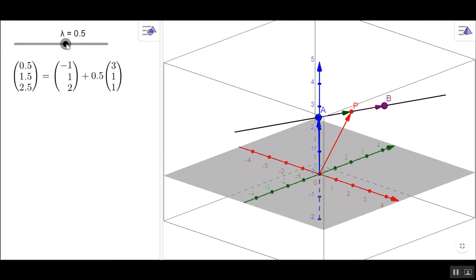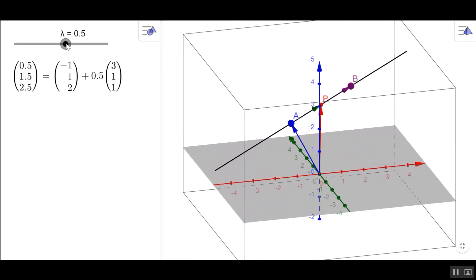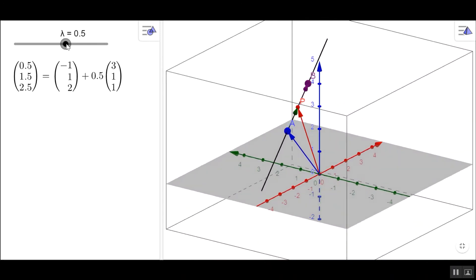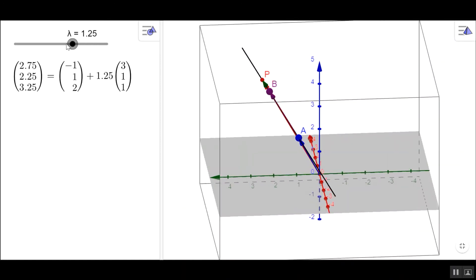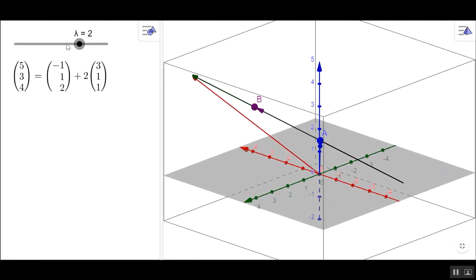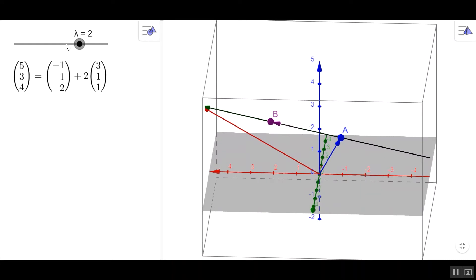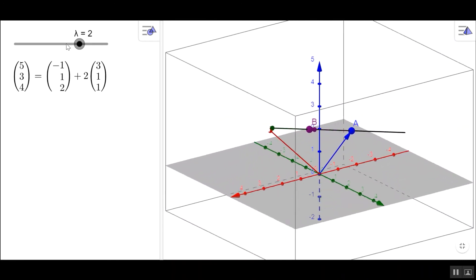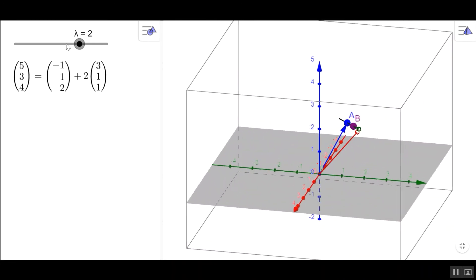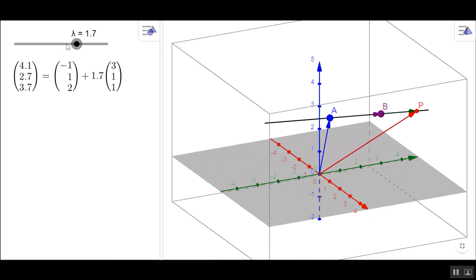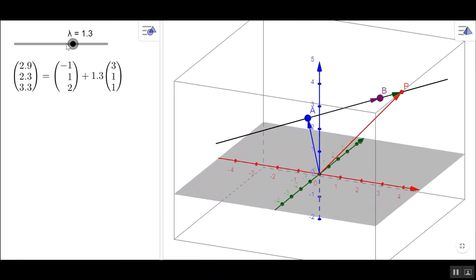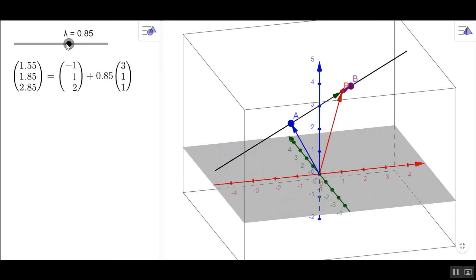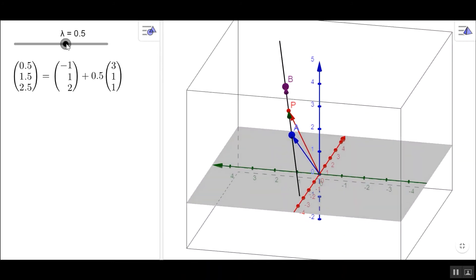Back to where I started. This was halfway along the line. OA plus a half AB will take me to this point P halfway along the line. Or I could have two lots of AB and be just at the top of the screen, just off the screen here, two lots of AB. And it gives a sense that for this way of writing the vector equation of the line, any particular point on the line correspond to a specific value of Lambda.